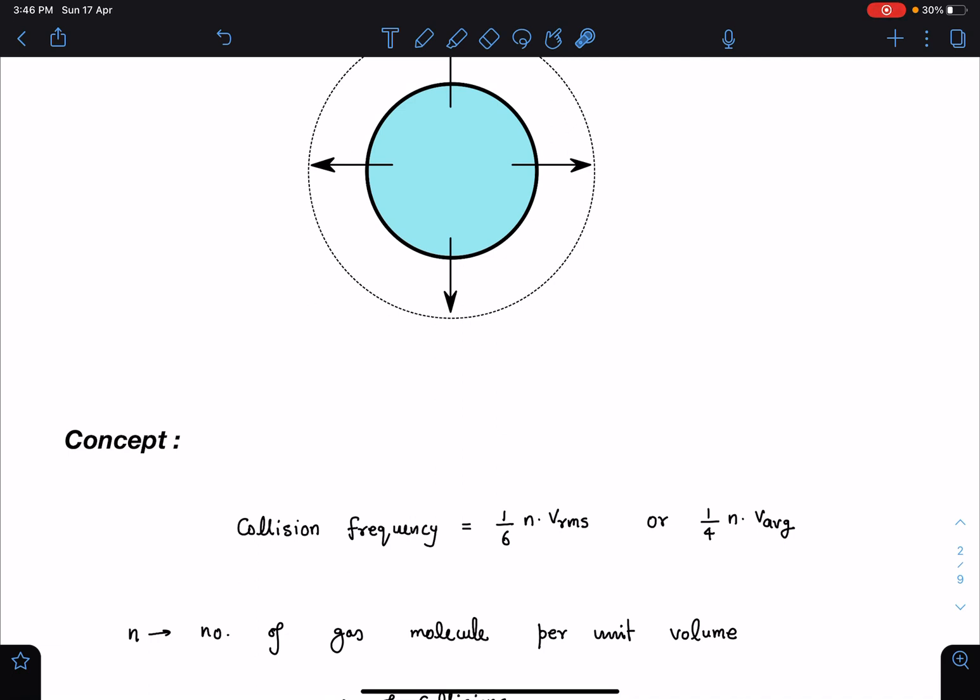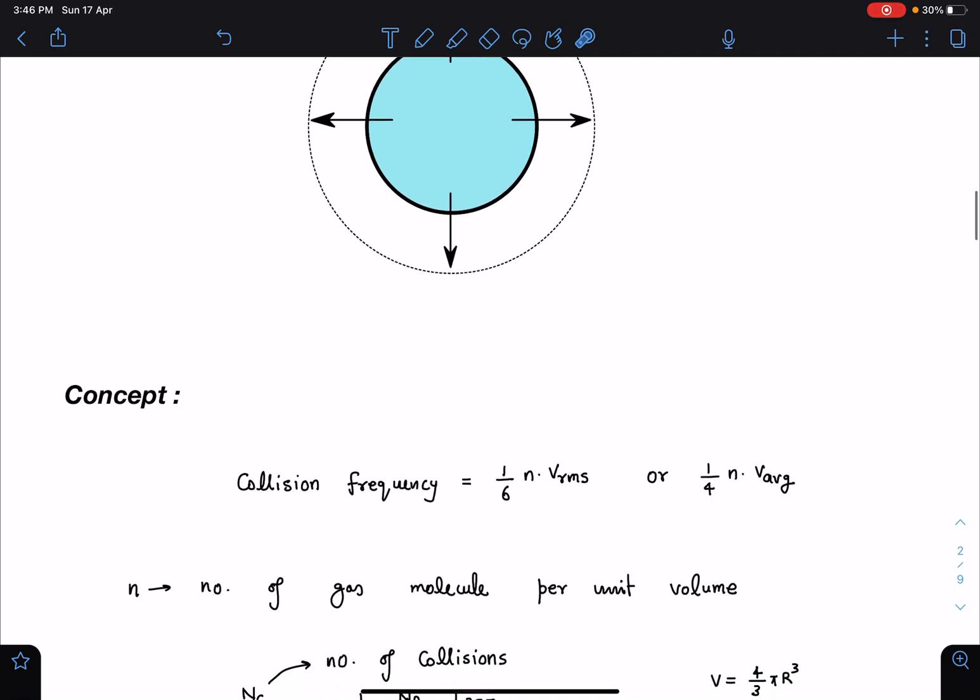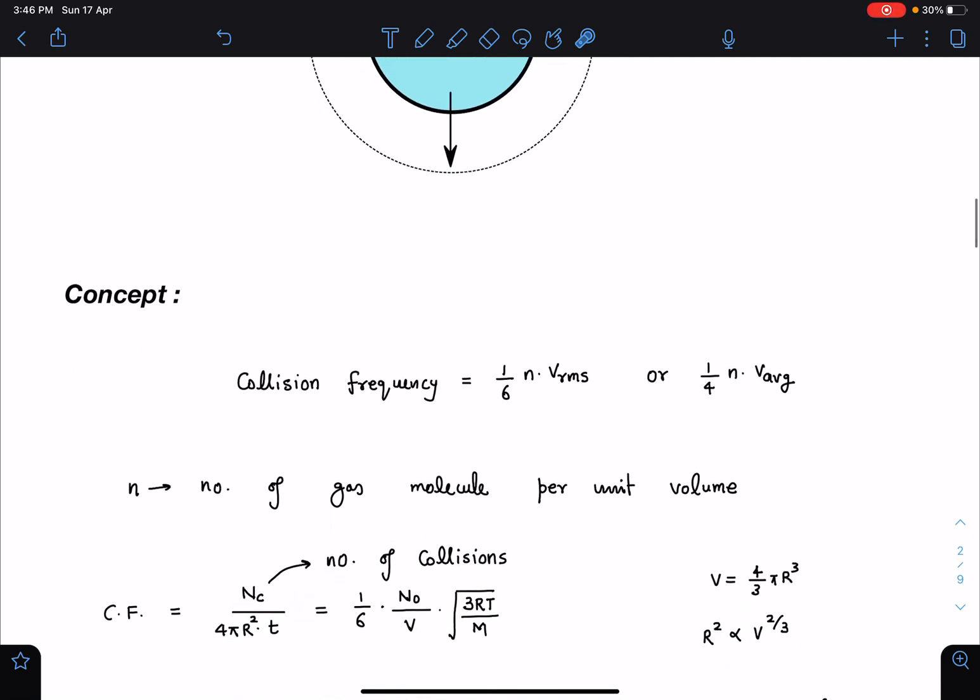The collision frequency actually is number of collisions per unit area per unit time with the container wall. So this n in the formula is the number of gas molecules per unit volume, so you can say gas molecule concentration.